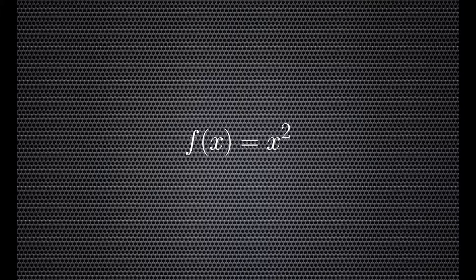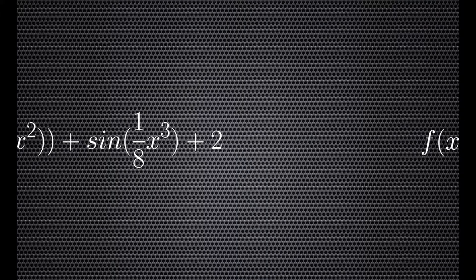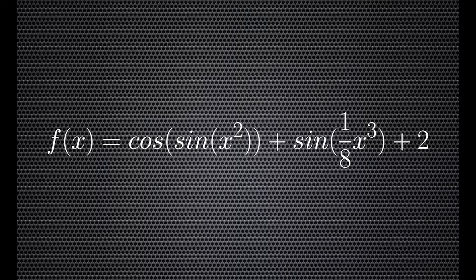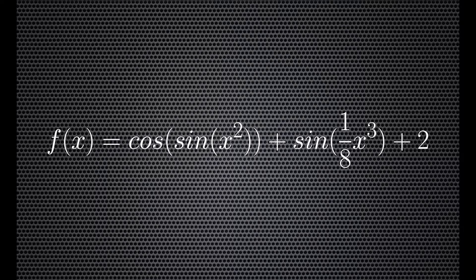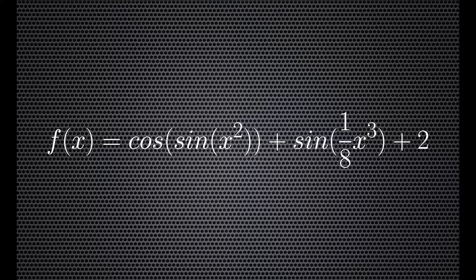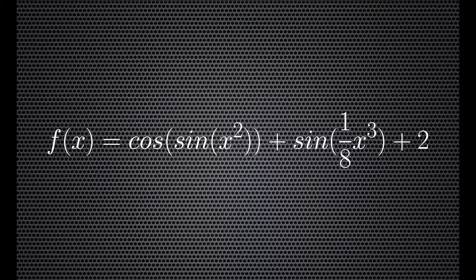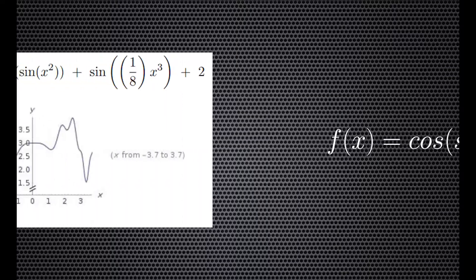Second, we use the quadratic function to introduce a somewhat simple nonlinear case. Last, we gave it the function the cosine of the sine of x squared plus the sine of one eighth x cubed plus two. Needless to say, this curve is not linear or simple. In case you're wondering what the graph of that would look like, it looks like this.